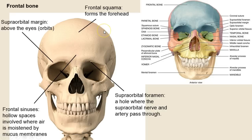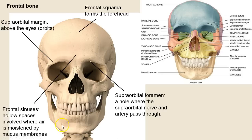The frontal bone was the first one in our preview. It is a singular bone, not paired. The supraorbital margin — 'supra' means above, 'orbit' means the eyes. The squama is the flat area. The supraorbital foramen ('foramen' means hole) is where nerves and arteries pass. Whenever you see holes there's always a purpose — like the mental foramen, where blood vessels and nerves move to the surfaces. The frontal sinuses are where air is moistened.